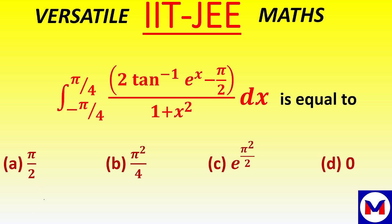Welcome to the channel. The problem today is related to the properties of definite integration. The problem is: I equals the integral from minus pi by 4 to pi by 4 of tan inverse of e to the power x, minus pi by 2, upon 1 plus x squared, dx. The options are: (a) pi by 2, (b) pi squared by 4, (c) e to the power pi squared by 2, or (d) 0.